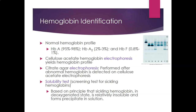Hemoglobin identification methods: the CBC gives hemoglobin quantity but not its composition. A normal hemoglobin profile shows 95–98% hemoglobin A, 2–3% hemoglobin A2, and 0.8–1% hemoglobin F. Cellulose acetate hemoglobin electrophoresis is performed first to give an initial hemoglobin profile; if abnormalities are found, citrate agar electrophoresis is done for more detail. A solubility test is a screening test for sickling hemoglobins, based on the principle that sickling hemoglobins in a deoxygenated state are insoluble and form precipitates.